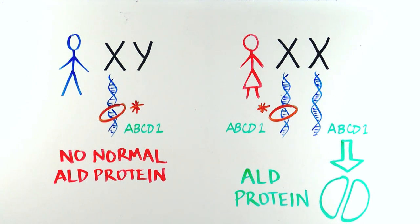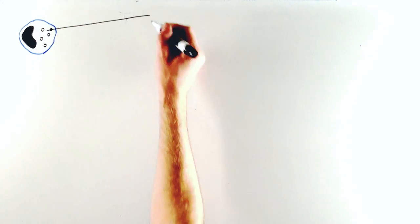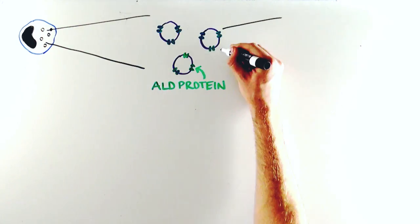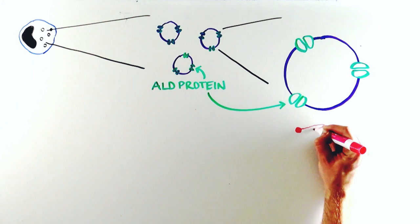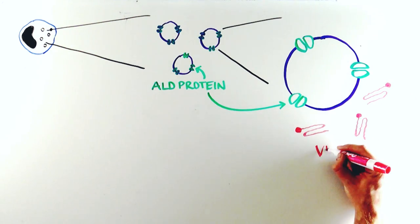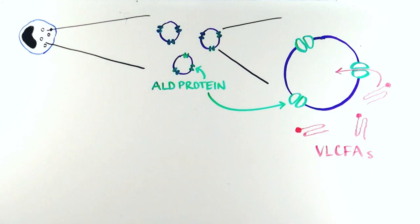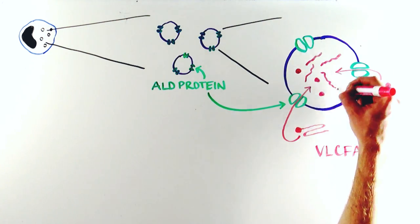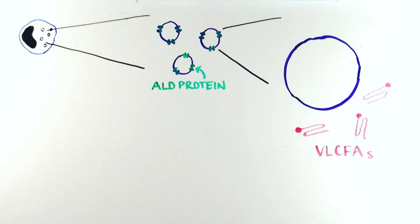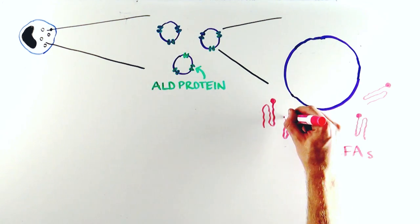So what effect does an ABCD1 mutation have on the cell? In the cell, ALD protein is normally present on the surface of structures called peroxisomes. ALD protein is responsible for transporting specific kinds of fats called very long-chain fatty acids, or VLCFAs, into the peroxisome where they are broken down. When a cell doesn't produce functional ALD protein, very long-chain fatty acids can't get broken down in the peroxisomes, so they accumulate.